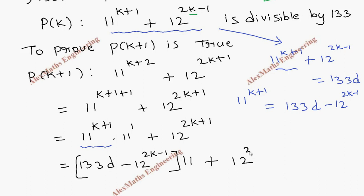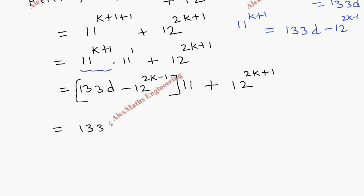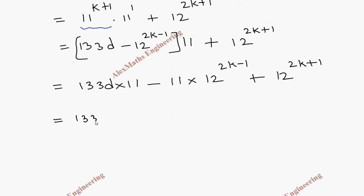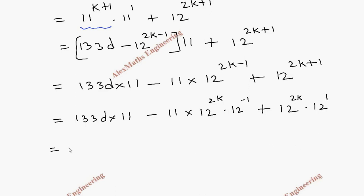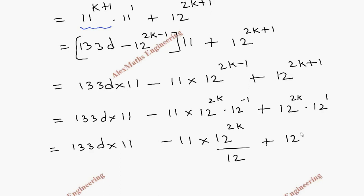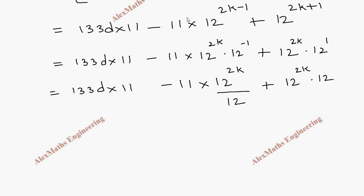Substituting gives (133d − 12^(2k-1)) × 11 + 12^(2k+1). Multiplying 11 inside: 133d × 11 − 11 × 12^(2k-1) + 12^(2k+1). We split 12^(2k+1) as 12^(2k) × 12 and write 12^(2k-1) as 12^(2k) × 12^(-1), which is 12^(2k)/12.